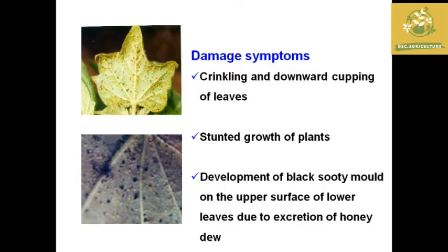The major symptoms of aphid are crinkling and downward cupping of leaves. Aphid also causes secondary damage — black sooty mold from honeydew secretion.